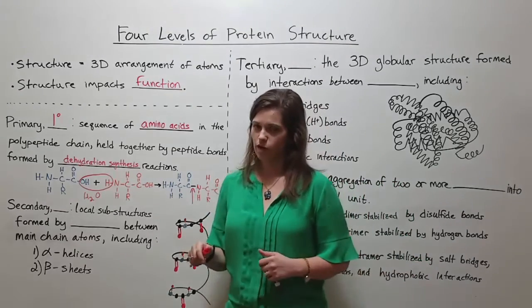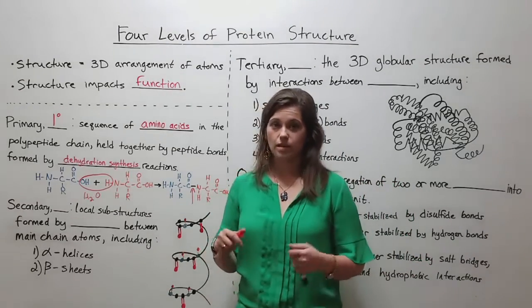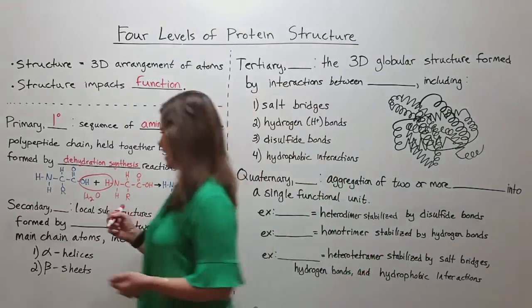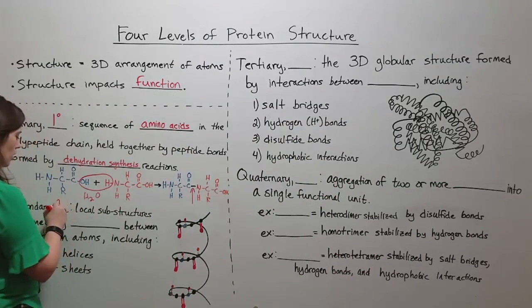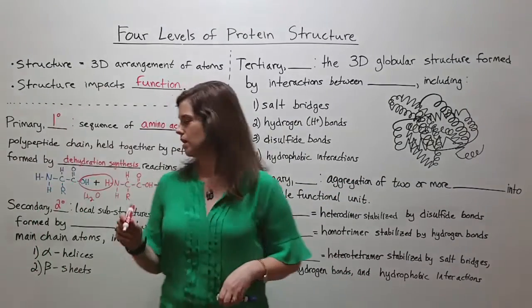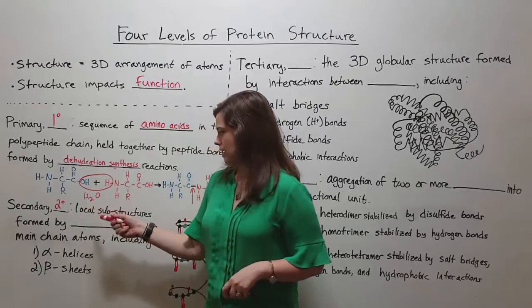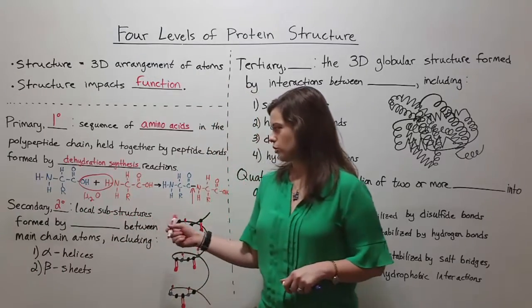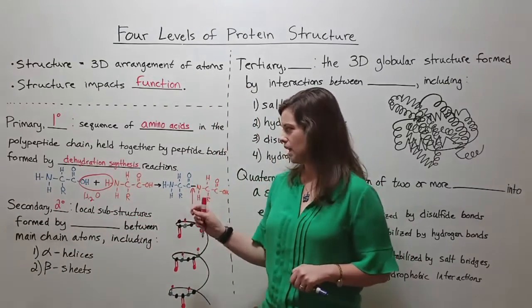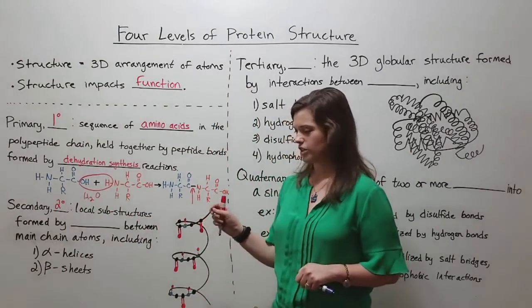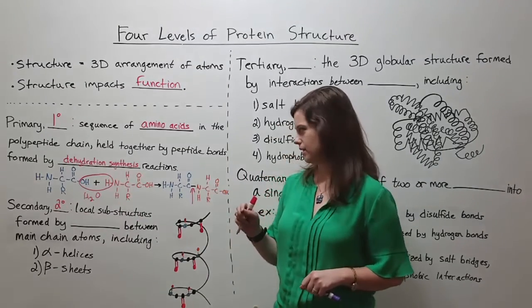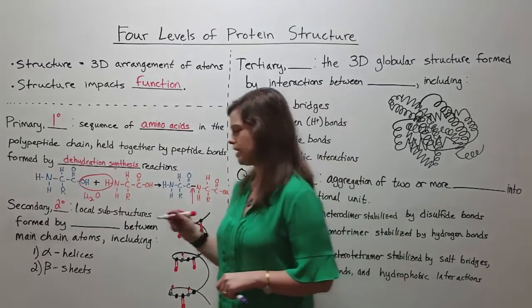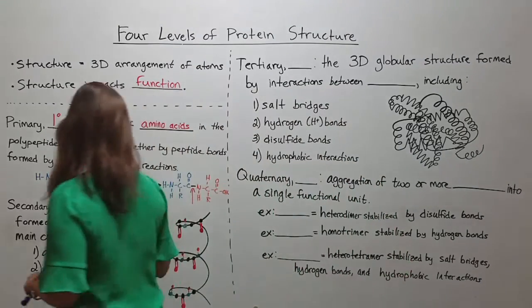Secondary structure is where we get to be a little bit more complicated. We can abbreviate secondary structure as 2°. Secondary structure refers to local substructures that are formed by hydrogen bonds between main chain atoms.